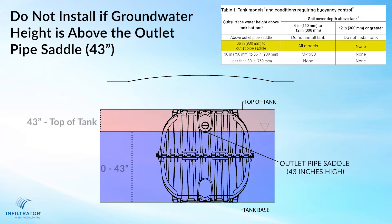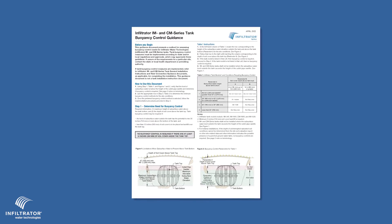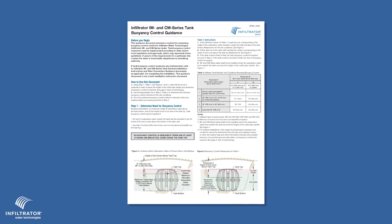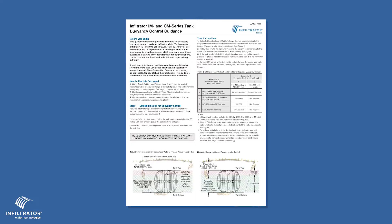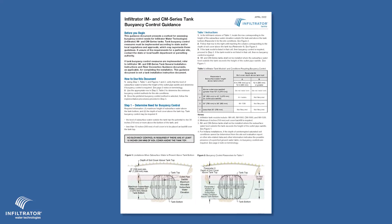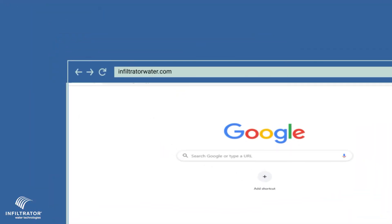Infiltrator's structural design prohibits tank installation when the water table is above the outlet pipe saddle. For more information about when and how to apply the buoyancy control measures, please refer to the Infiltrator IM and CM Series Tank Buoyancy Control document, which can be found on the Infiltrator website.